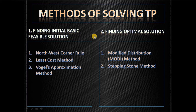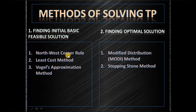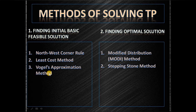Next are the methods of solving transportation problem. You need to go through two stages. First, finding the initial basic feasible solution (BFS). To calculate the basic feasible solution you follow any one of three methods: the North-West Corner Rule, where allocation starts from the north-west corner; the Least Cost Method, where you select the least cost cell first for allocation; and Vogel's Approximation Method, where you calculate row and column differences (penalties) and allocate based on the highest penalty.